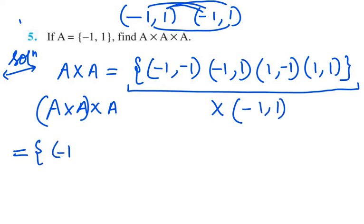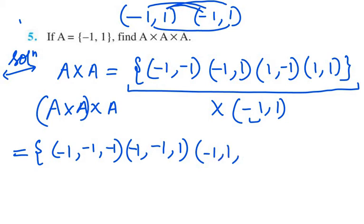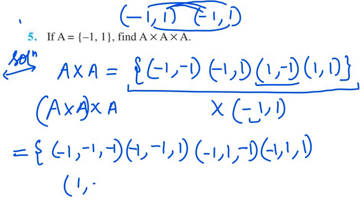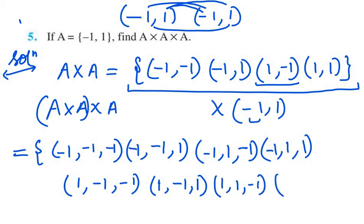So A cross A cross A will be: (-1, -1) with -1, then (-1, -1) with 1, then (-1, 1) with -1, then (-1, 1) with 1, then (1, 1) with -1, then (1, 1) with 1. So that's all for question number 5.